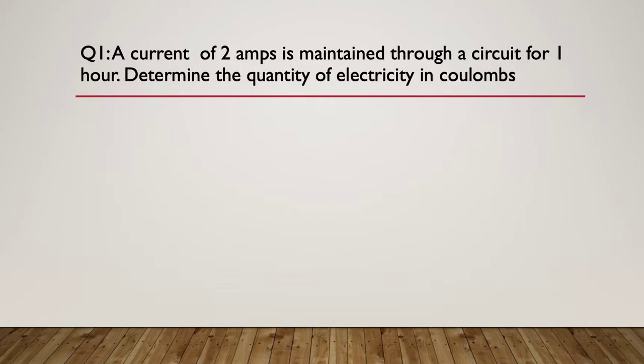So our first question is question one: a current of two amps is maintained through a circuit for one hour. Determine the quantity of electricity in coulombs. So you pause here.